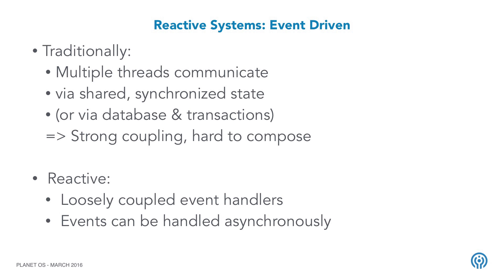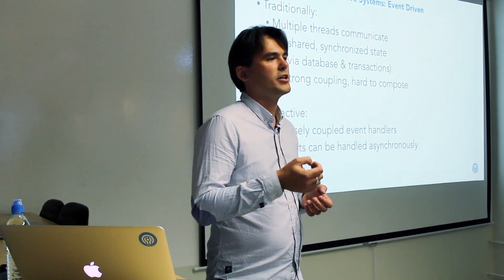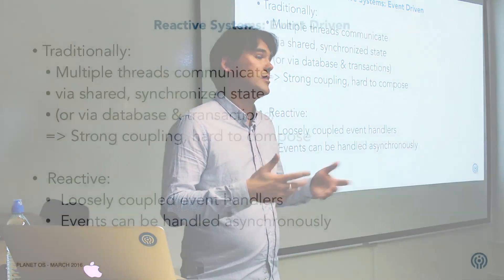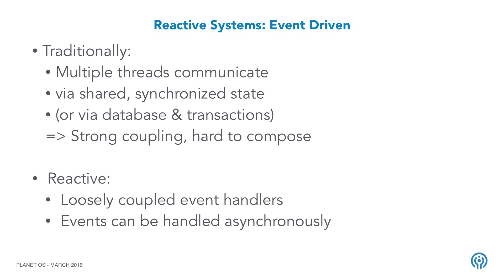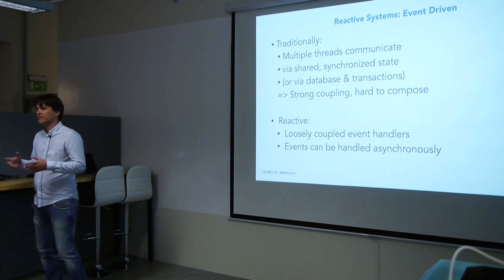Event-driven: traditionally, event-driven systems have been written so that you have multiple threads, maybe running on multiple machines, and if threads need to communicate they would use some kind of shared mutable state — maybe a synchronized block in Java, or a database where you modify data via transactions. This works to a certain extent but gets harder as your system grows. The idea is to create lots of independent event handlers that exchange messages asynchronously and know about each other as little as possible, with state encapsulated within each event handler.